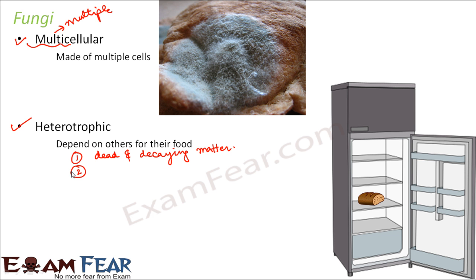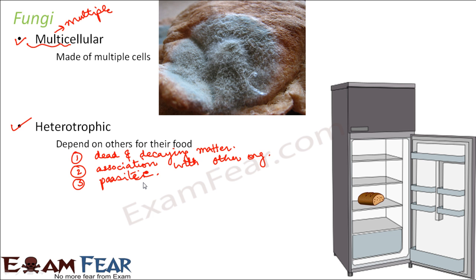Next, fungi can exist with other organisms and get food from them through association — where fungi also help that organism in some way and that organism provides food to the fungi. The third scenario is that fungi can also be parasitic, meaning it lives inside the body of another animal, gets its food from that animal, and at the same time causes disease to that animal. So fungi can also be parasitic in nature.